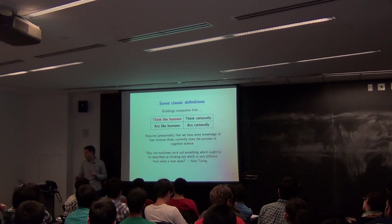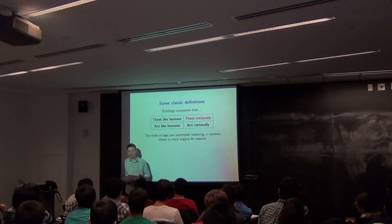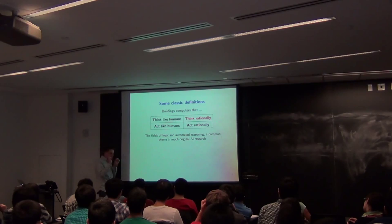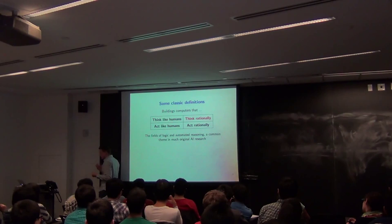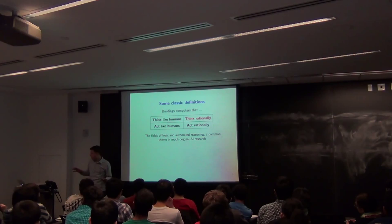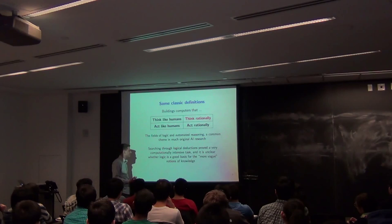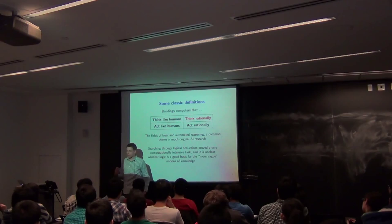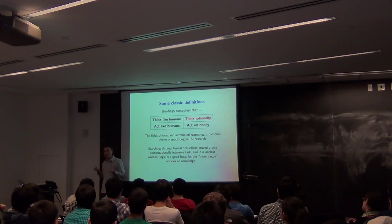Because of this, many early AI researchers shifted from thinking like humans to thinking rationally — that seems like a better goal. This led initially to a big emphasis on automated reasoning and logic as the foundation of AI. But a few problems arose: searching through logical derivations is computationally intensive, and it's also unclear if logic really captures all the kinds of human knowledge people actually have.